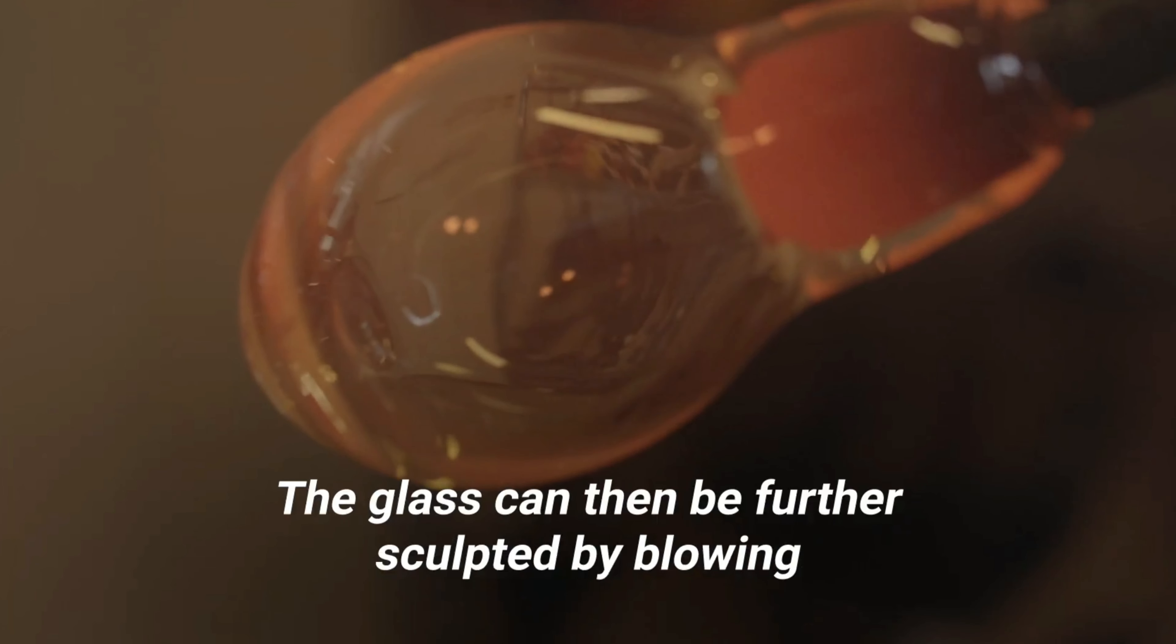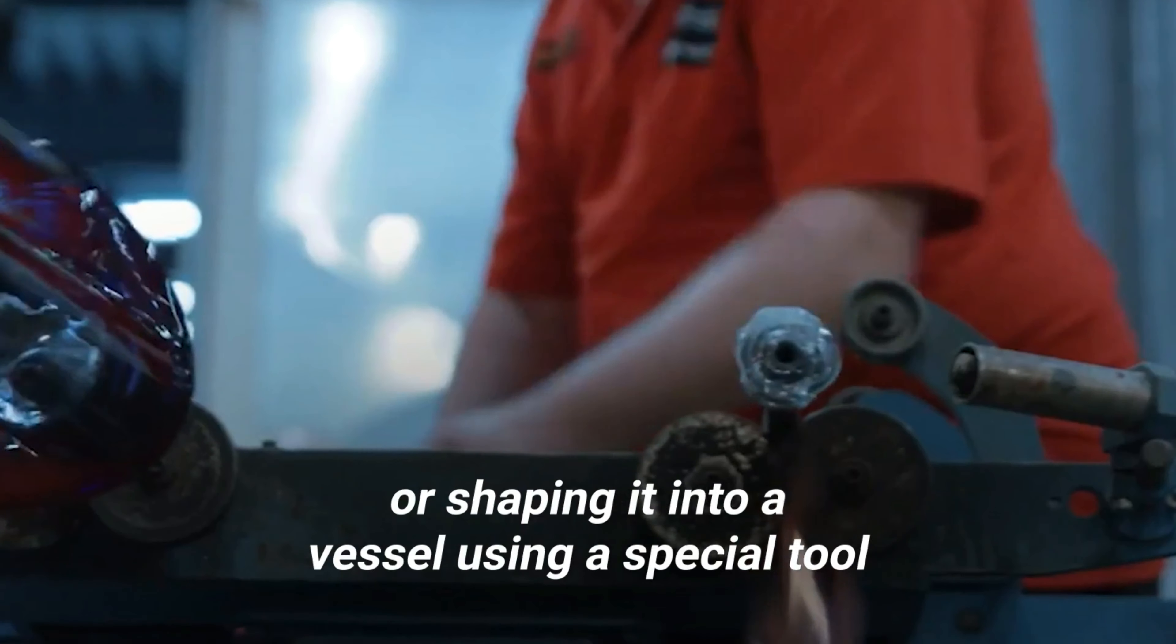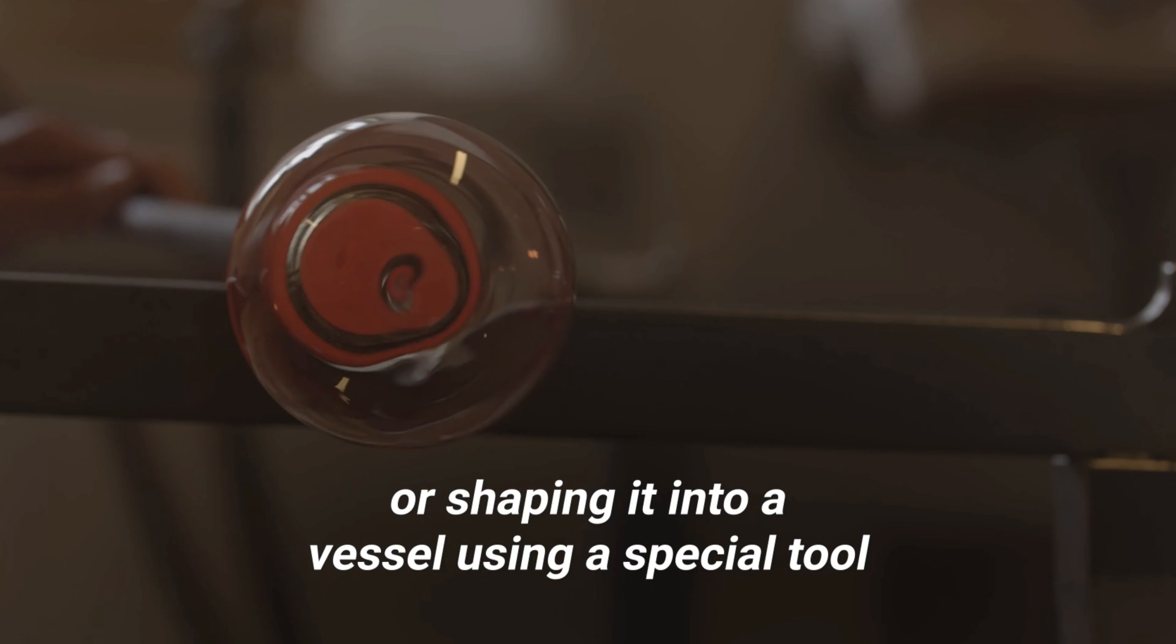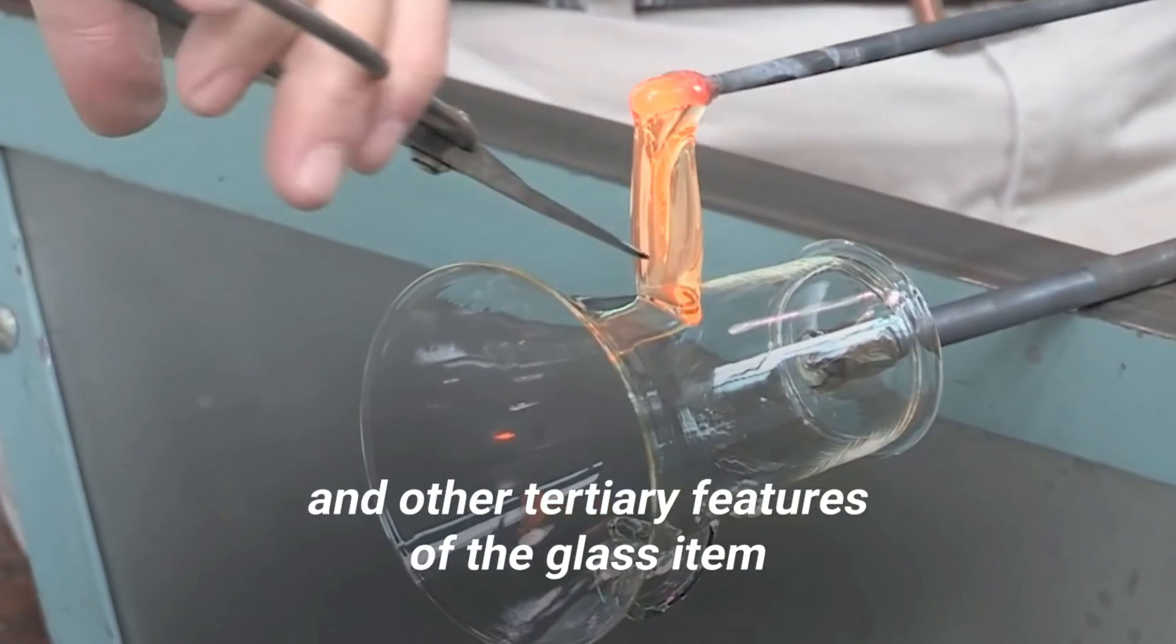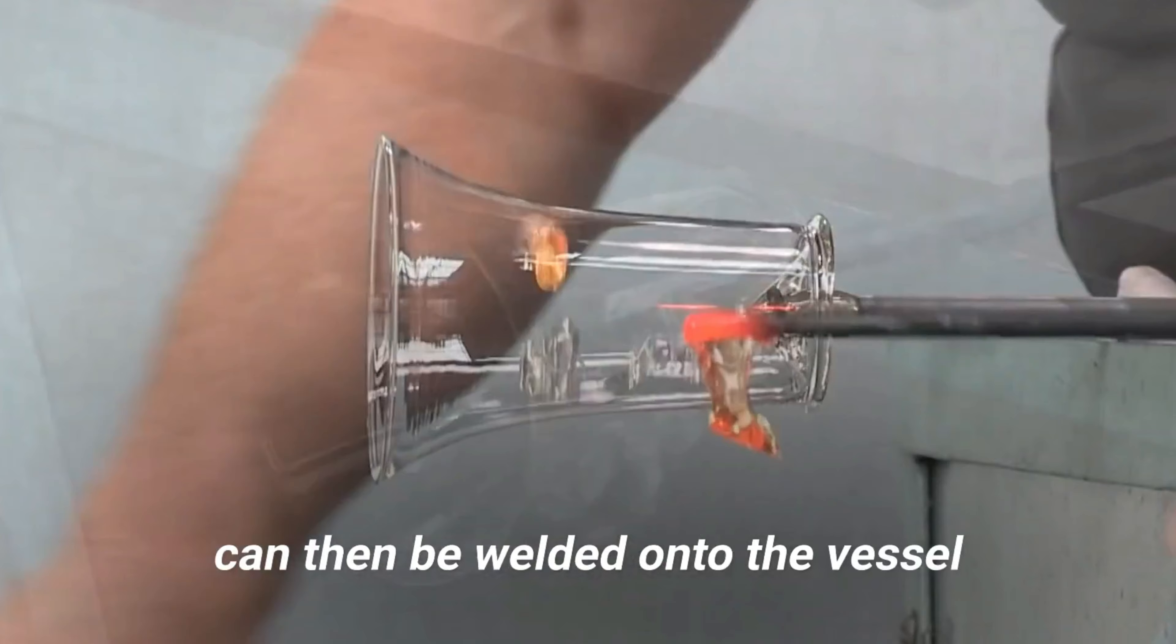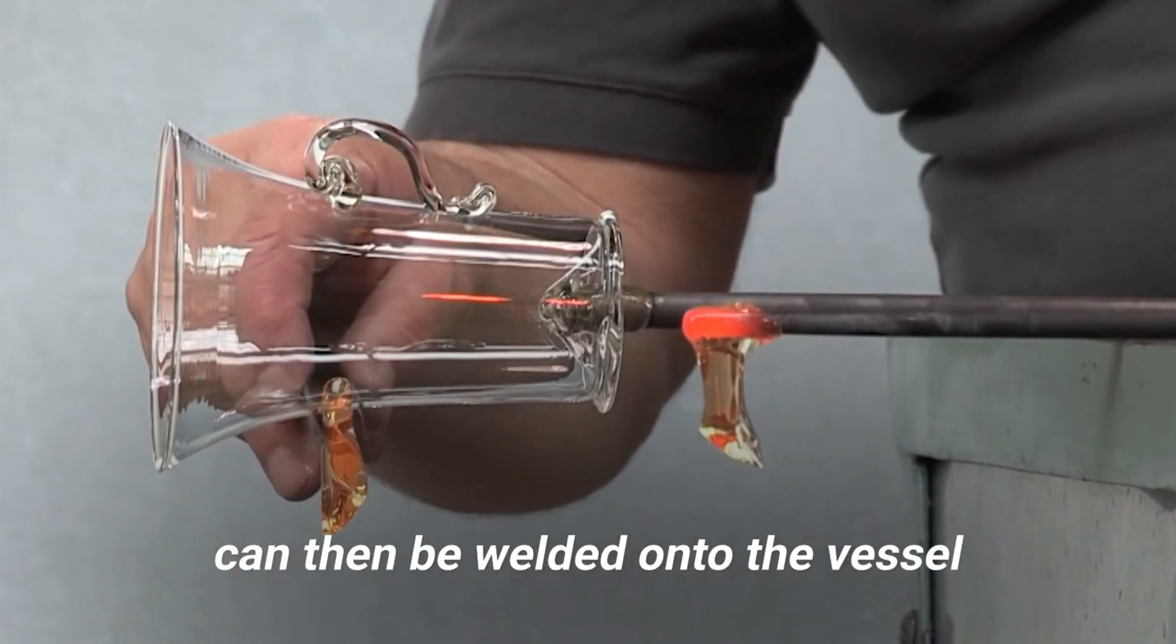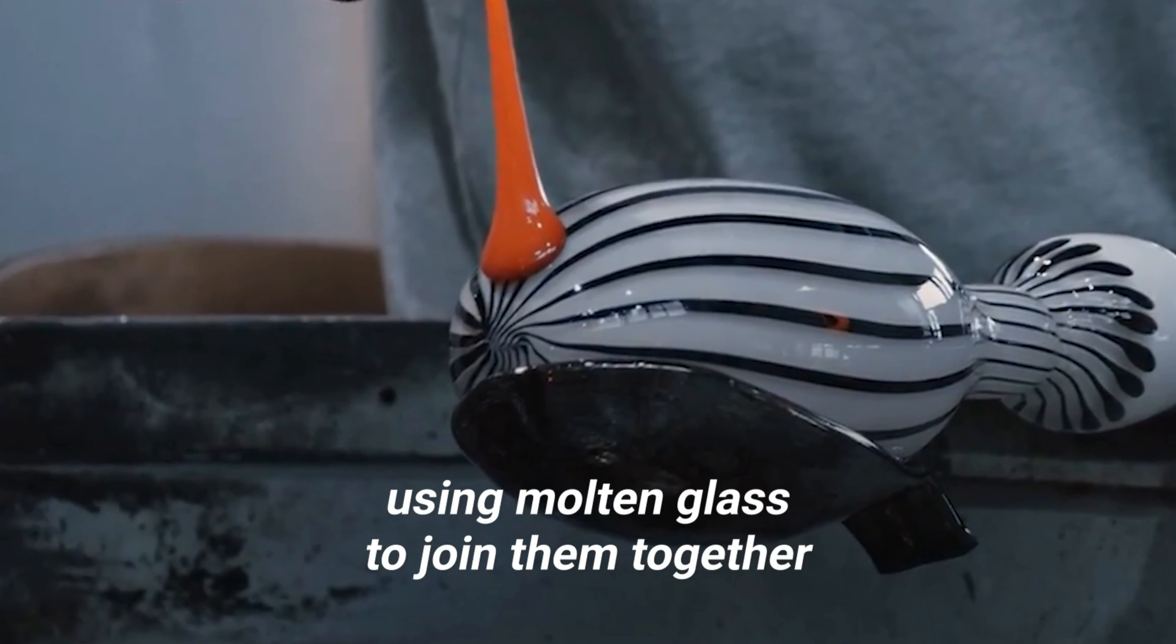The glass can then be further sculpted by blowing, swinging, and rolling it, or shaping it into a vessel using a special tool called a marver. Stems, handles, and other tertiary features of the glass item can then be welded onto the vessel, using molten glass to join them together.